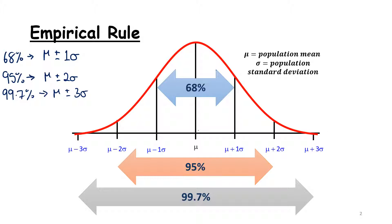A note for Higher Level: we don't generally talk about two standard deviations; we actually talk about 1.96. But the empirical rule still states two, and as we get into inferential statistics we will be looking at it as 1.96.